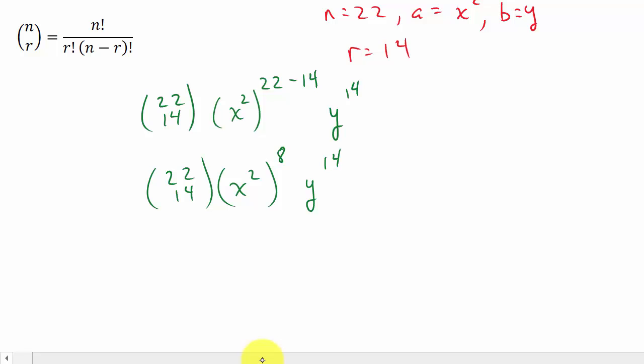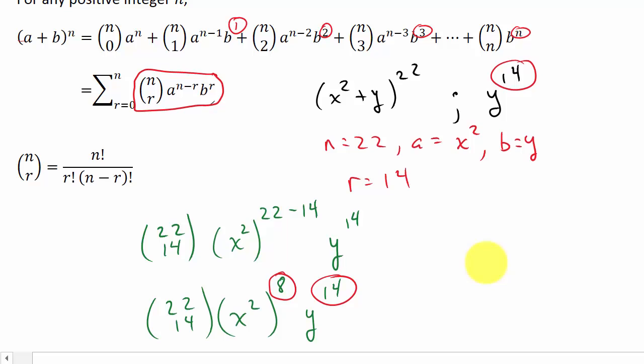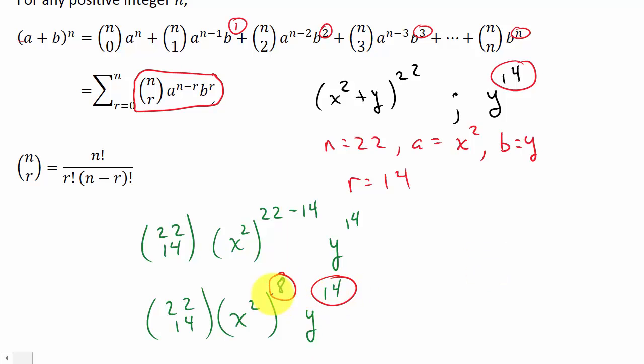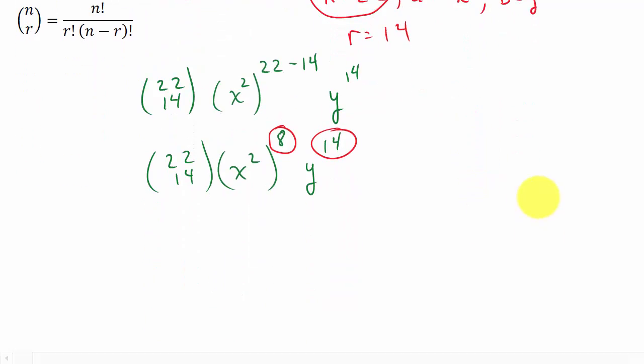Now one thing that you need to understand here. You see this exponent and this exponent. These two numbers here have to add up to give us n. And you can see 8 plus 14 is 22. So that works. So now we have combination 22 choose 14 times x, and then remember, exponents like this, you multiply them. So 2 times 8 is 16. And then y to the 14th.